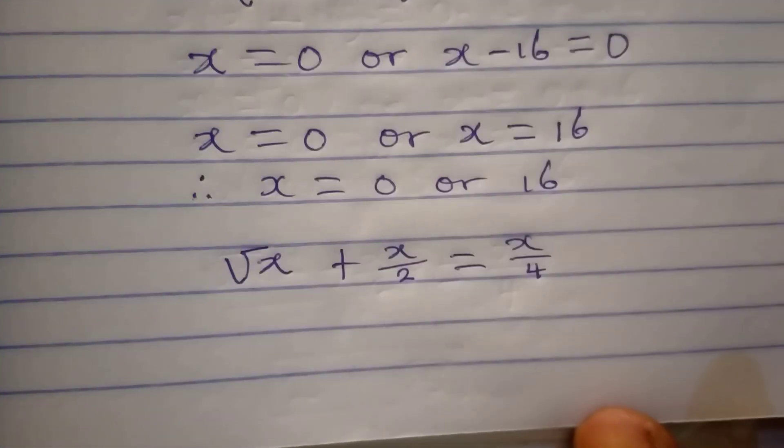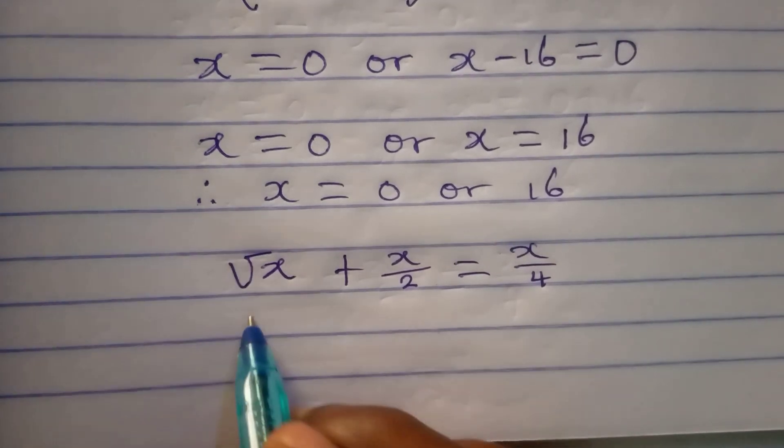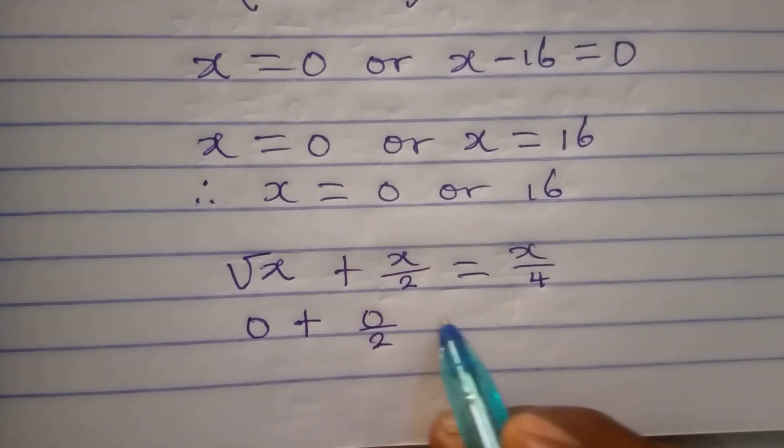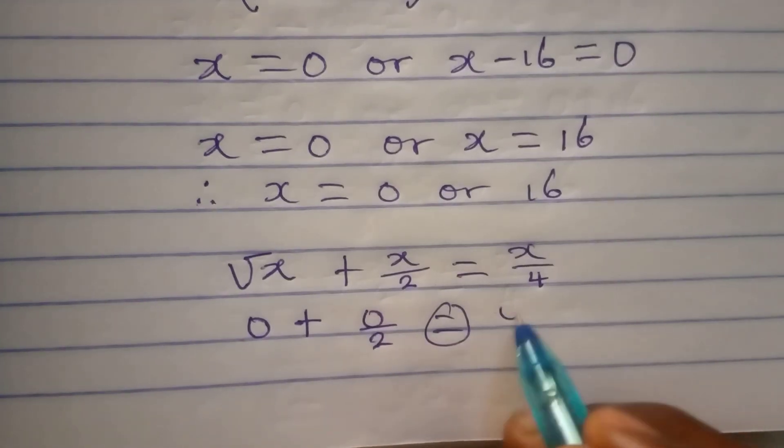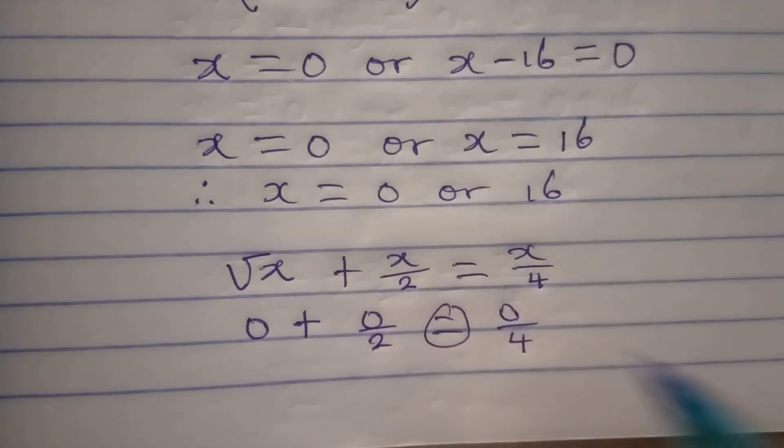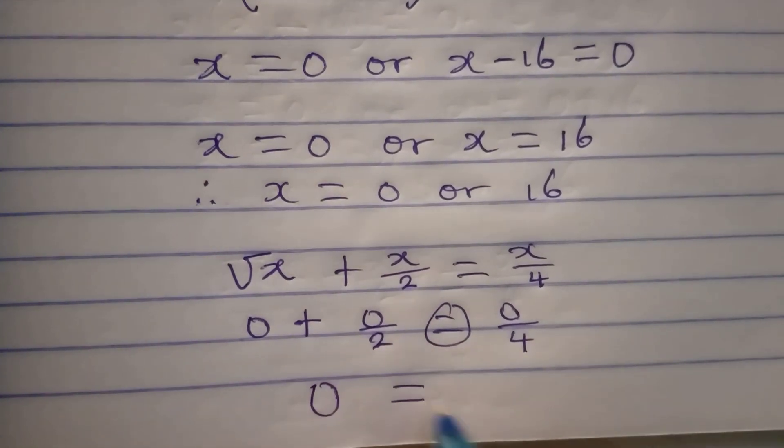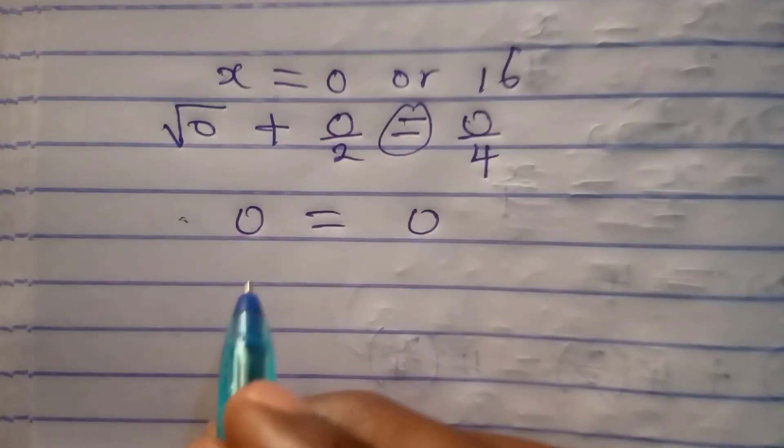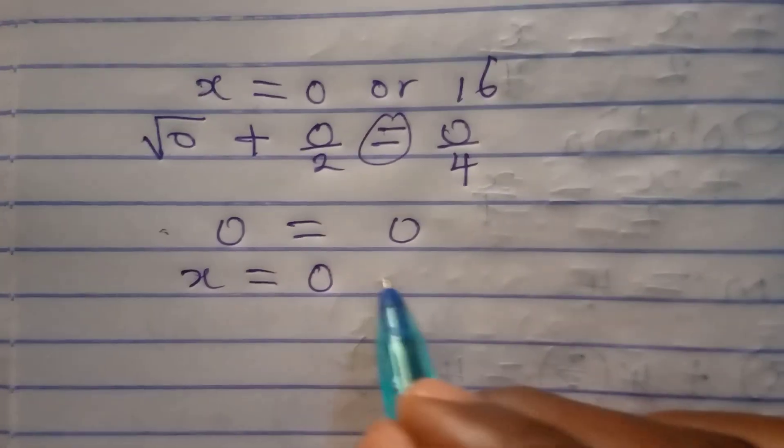In place of x if I substitute zero, I'm going to have zero plus zero over 2 equals zero over 4. The answer is yes. On the left we have zero and on the right we have zero. So we can conclude that x is equal to zero and it satisfies the given equation.